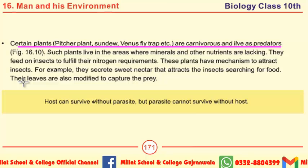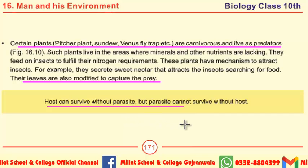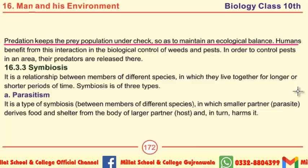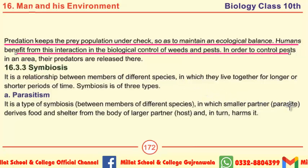Moving towards MCQs: leaves of plants are modified to capture prey. The last MCQ is: the host can survive without a parasite, but a parasite cannot survive without a host. How does predation keep the prey population in check? Predation keeps the prey population under check so as to maintain an ecological balance. Humans benefit from this interaction in the biological control of weeds and pests — predators are released in an area to control pests there.